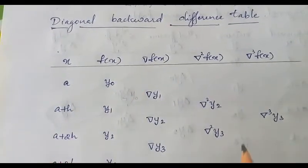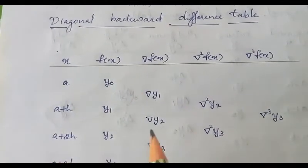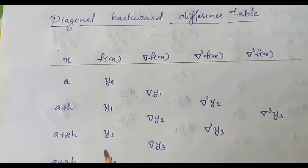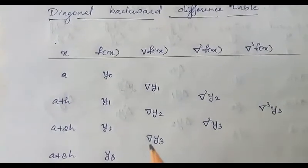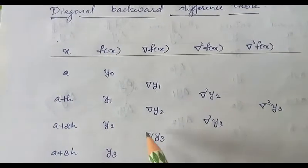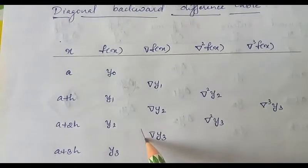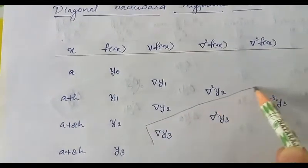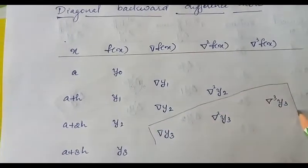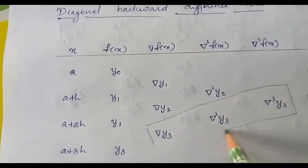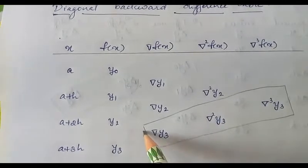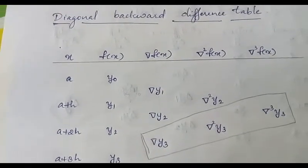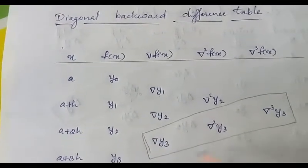So y2 minus y1 is represented as del y2, and y3 minus y2 is represented as del y3. For the second backward difference del squared: del y2 minus del y1 is equal to del squared y2, and del y3 minus del y2 is written as del squared y3. The third backward difference del cube y3 equals del squared y3 minus del squared y2. This is the diagonal backward difference table, and the leading backward differences are taken from the end of the table.